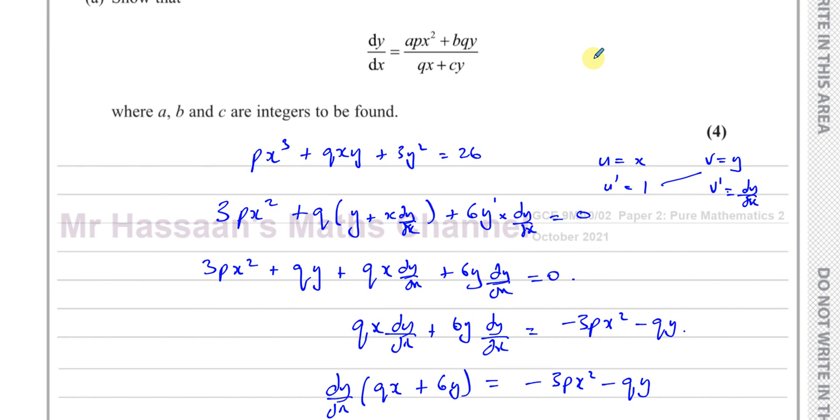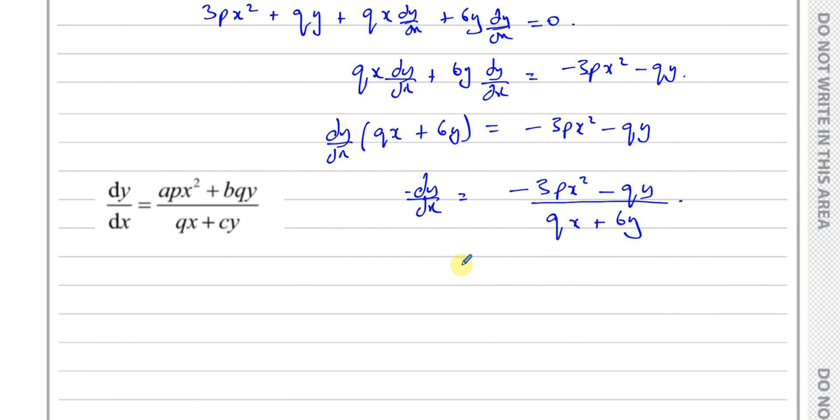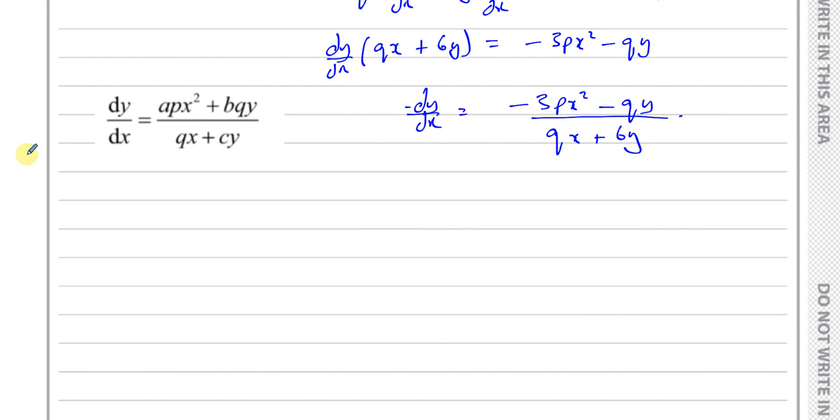And they've asked us to find it in this form. Let me just bring that form down here. Okay, so this is the form that they want us to write it in. So we can see here that a, we have to find the values of a, b, and c. So we can see here that a is equal to -3, apx². And we can see that b is equal to -1. And we've got qx + 6y, so c is equal to 6. So that's what we have here in terms of a, b, and c.